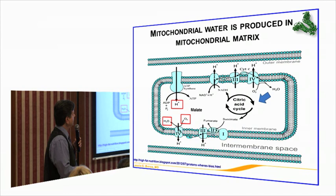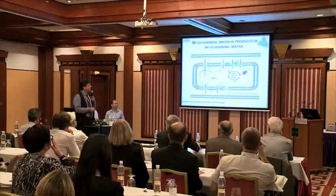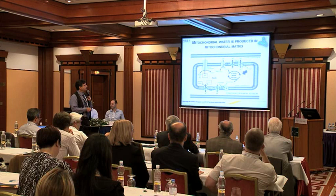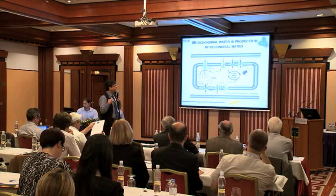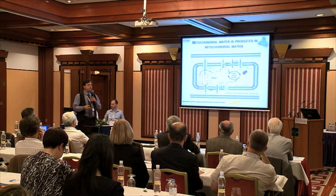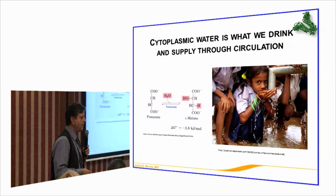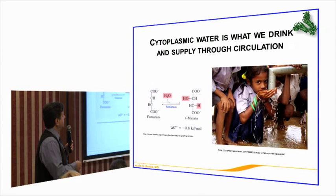What is really interesting about mitochondria is that it has a double membrane and no other transport systems other than certain cofactors and substrates that supply hydrogen and consume oxygen. Oxygen is delivered via hemoglobin, which takes oxygen to the cell membranes, where it diffuses through. Cytoplasmic water, on the other hand, is what we drink and supply through the circulation.